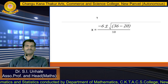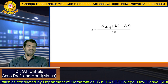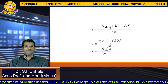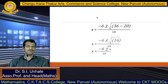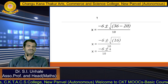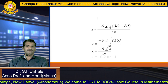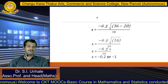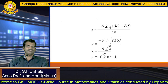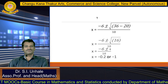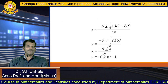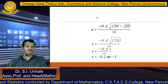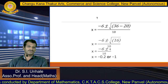Simplifying: 6² = 36, 4×5 = 20, so we get x = (−6 ± √(36 − 20)) / 10 = (−6 ± √16) / 10. Since √16 = 4, we get x = (−6 ± 4) / 10. Therefore x = (−6 + 4)/10 = −0.2 or x = (−6 − 4)/10 = −1. So the two roots of the quadratic equation are x = −0.2 and x = −1.